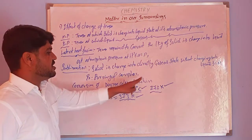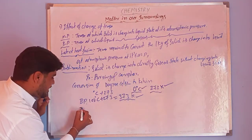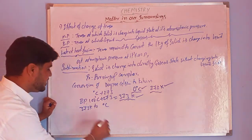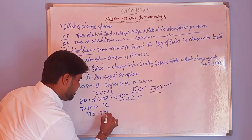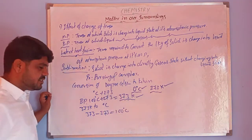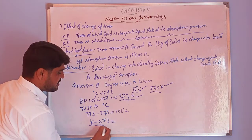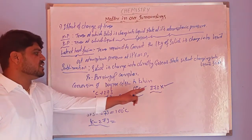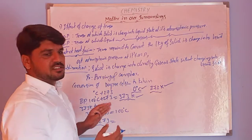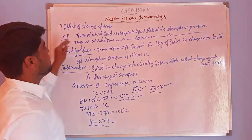To convert Kelvin back to degree Celsius: take the Kelvin temperature and subtract 273. For example, 373 K minus 273 gives 100°C. So the formula is: degree Celsius = Kelvin temperature minus 273. This is a very important concept. The next concept is the effect of change of pressure.